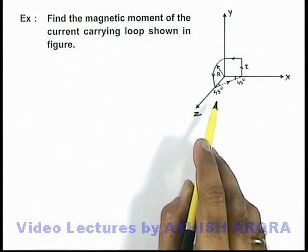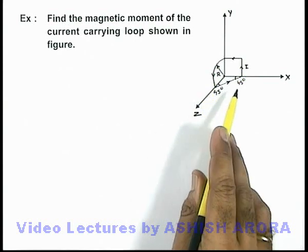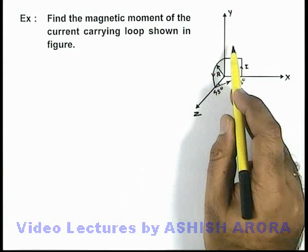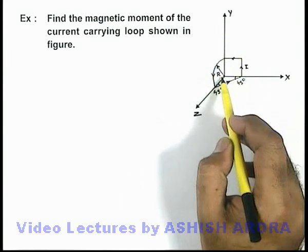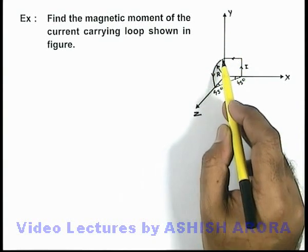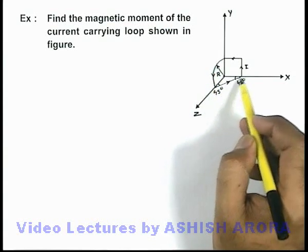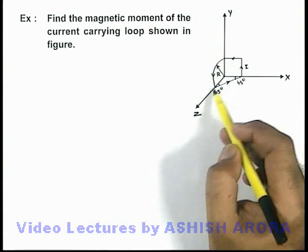If we have a look at the figure, we can see this is a 3-dimensional loop in which these two wire segments are in the x-y plane, making a square of edge length a. This is a quarter circular arc in the y-z plane, and this is a straight wire in the x-z plane.